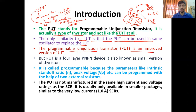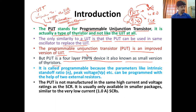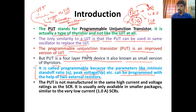PUT is an improved version of UJT. But PUT is a four-layer PNPN device, also known as a small version of thyristor. It is called programmable because the parameters like intrinsic stand-off ratio (eta) and peak voltage can be programmed with the help of two external resistors. इन दोनों की values को हम खुद change कर सकते हैं, इसलिए इसको programmable UJT कहते हैं।